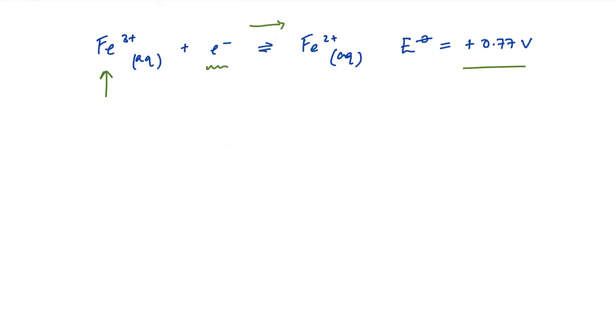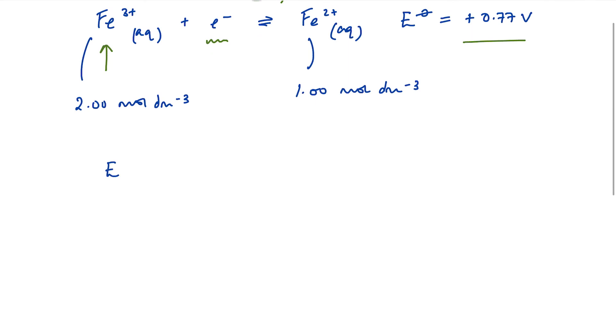Well, let's put some numbers in and see if that is the case. We will take our iron 3 plus concentration to be 2 mole per decimetre cubed. And our iron 2 to be 1 mole per decimetre cubed. So that's a shift away from the standard conditions. On the standard conditions, all ions in solution would be at 1 mole per decimetre cubed. So E equals E0 minus RT over ZF, LN, reduced over oxidized in terms of concentrations.